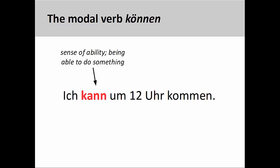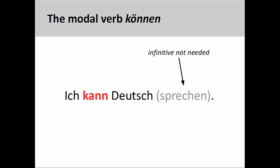The modal verb können conveys a sense of ability, a sense of being able to do something. In the sentence you see on the screen, Ich kann um 12 Uhr kommen, the subject of the sentence has the ability to come at 12 o'clock. You can also use können without an infinitive to express the knowledge of something or to know how to do something. For example, Ich kann Deutsch — I know German. In this case, the infinitive sprechen, meaning 'to speak,' is understood from the context.